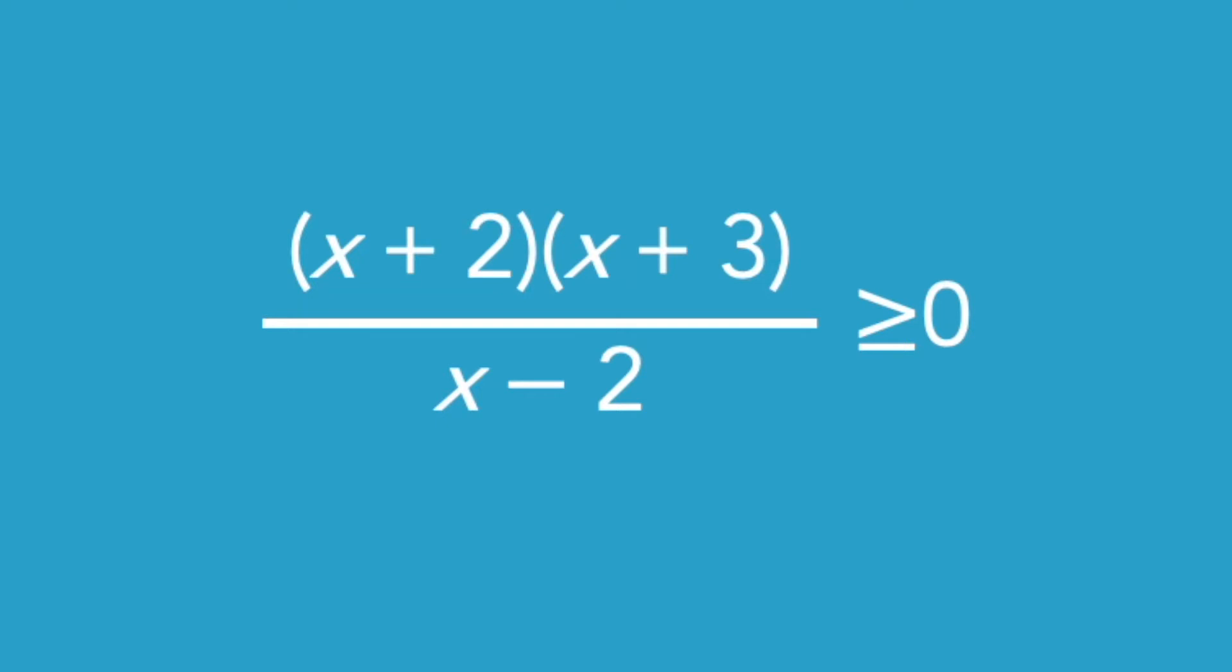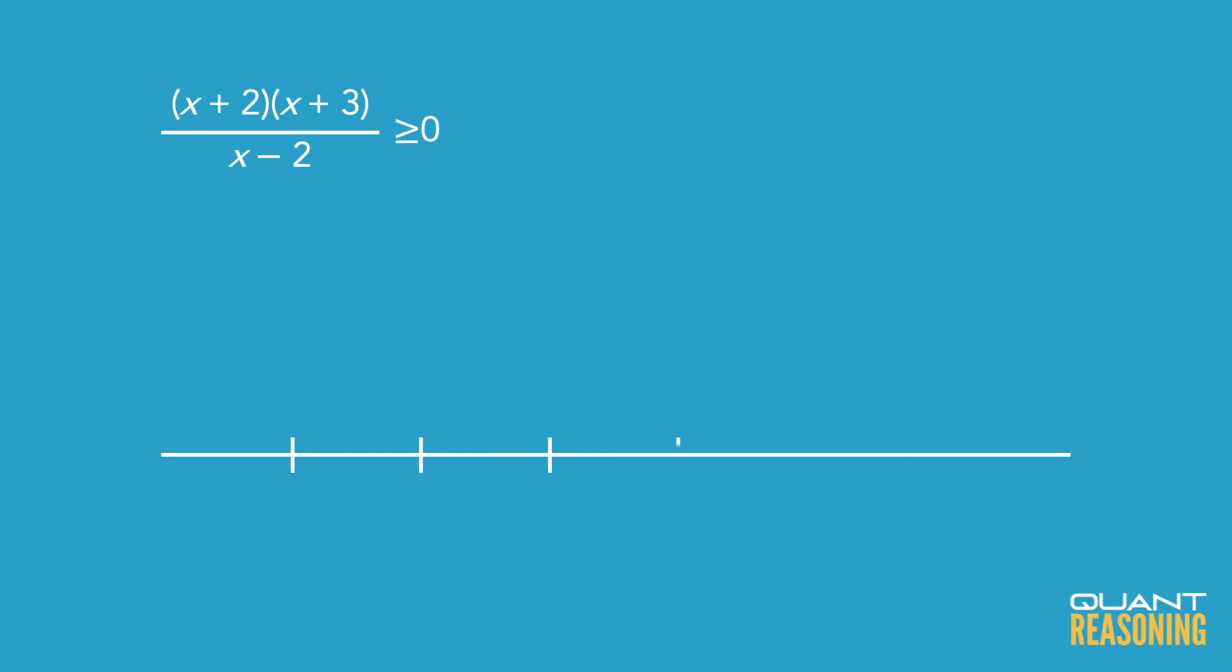So I would definitely draw all of this on a number line, and I would put x minus 2 on the left, and then four units to the right of that would be x plus 2, and then another unit to the right of that would be x plus 3.